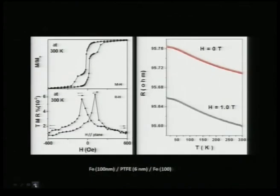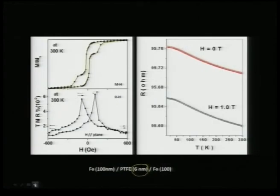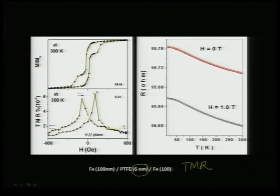If you go further to 6 nanometers, this response is much clearer. Compared to the previous one (which showed an inverted response), at higher thickness the response is now positive. At a critical thickness of around 6 nm, you are able to clearly demonstrate a tunneling magnetoresistance behavior. As a result, you see a positive MR — although the value is very small, it is appreciable to show that organic spintronics can be demonstrated.